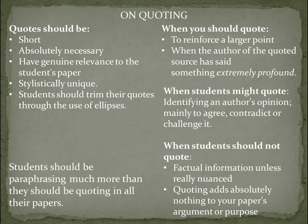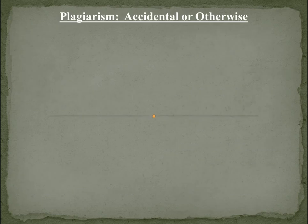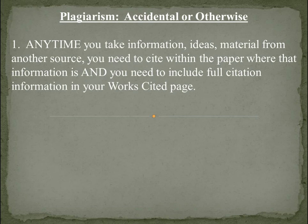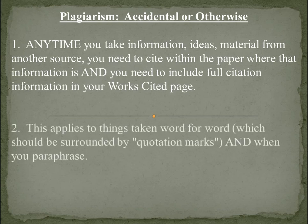Students should be paraphrasing much more than they should be quoting in their papers. Take the author's words, put them into your own words, and put that in the paper along with a citation. Remember that all papers in this course operate off a word count, and that word count doesn't include quotations but does include paraphrasing. To summarize: plagiarism, accidental or otherwise, is anytime you take information, ideas, or material from another source — you need to cite within your paper where that information is, and include the full citation in your works cited. This applies to things taken word for word, which should be surrounded by quotations, and when you paraphrase.